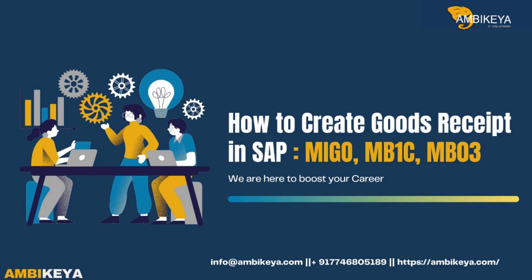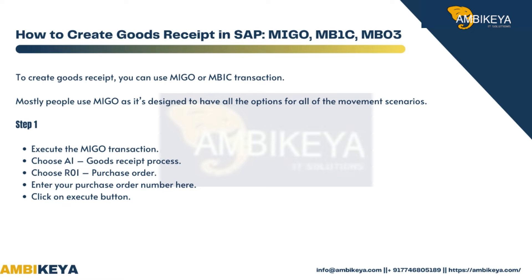I am going to explain how to create a goods receipt in SAP using MIGO, MB1C, and MB03. Most people use MIGO. Step 1: execute the MIGO transaction, choose 'Goods Receipt' as the process, choose 'Purchase Order' as the reference, and enter your purchase order number, then click Execute.